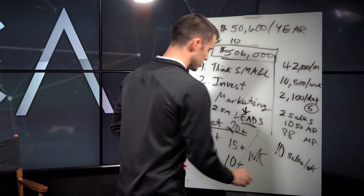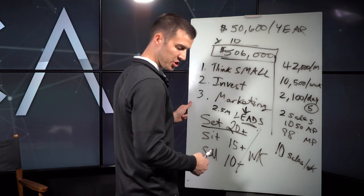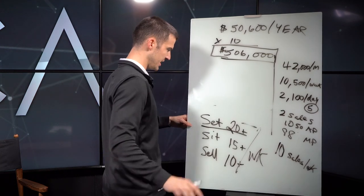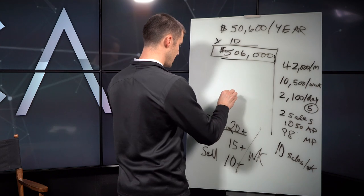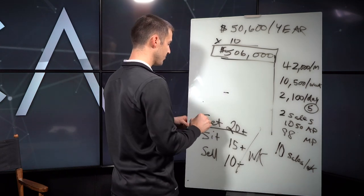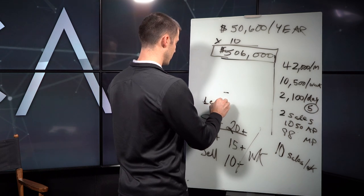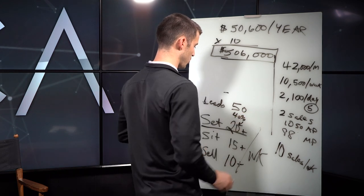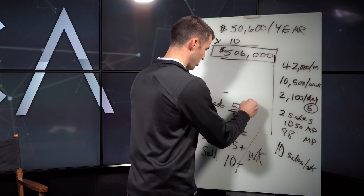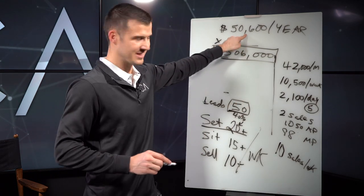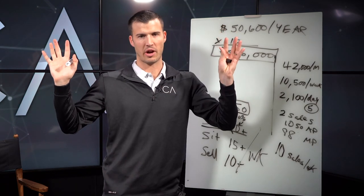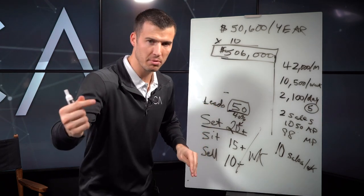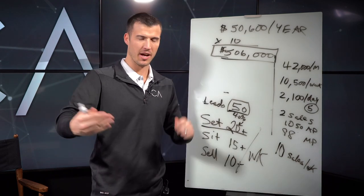These are weekly numbers. Let's say that you book at a 40% rate. That means you need 50 leads. 40% of 50 is 20 plus appointments a week. Most of you want to make a half a million bucks. Most of you are making 50,600 bucks on average. But if you're not getting 50 leads a week, that would probably be why you are unable to 10X your income thus far.